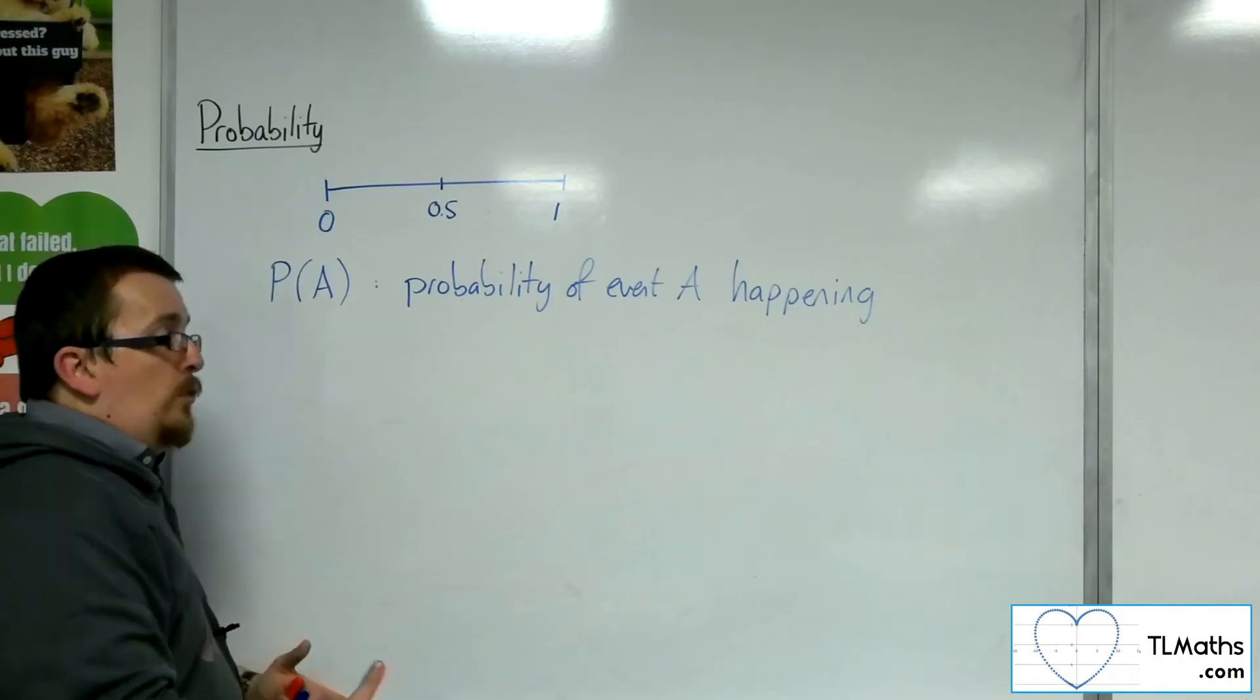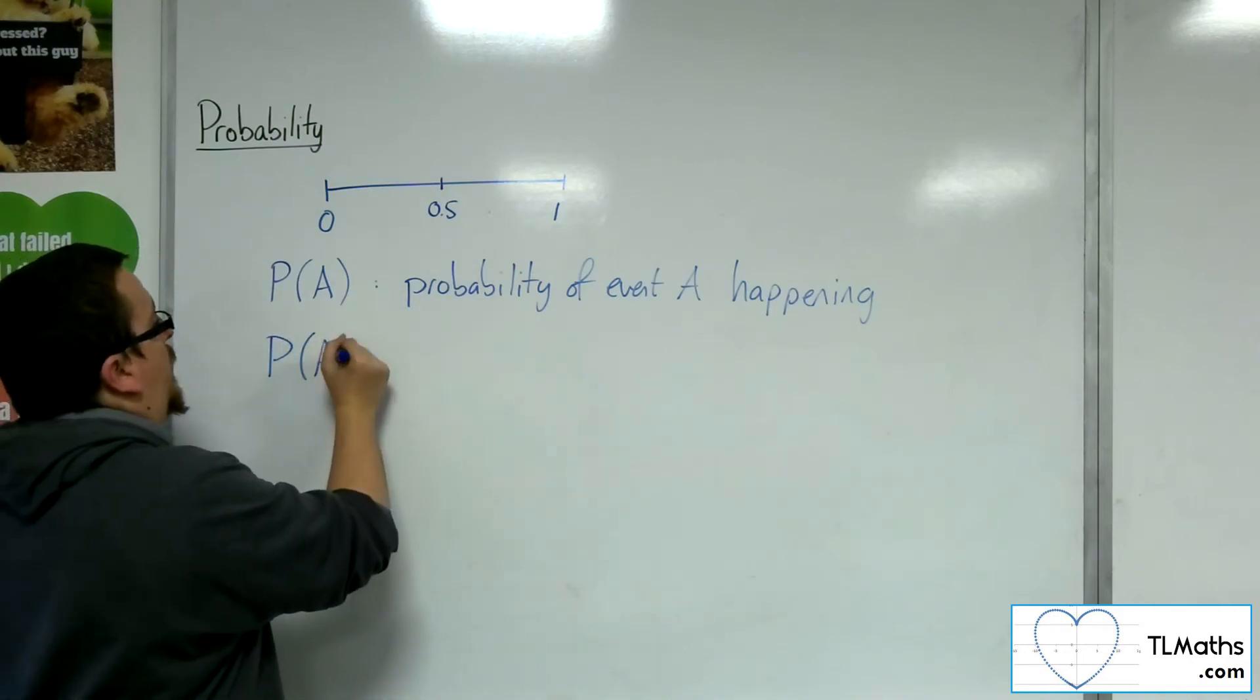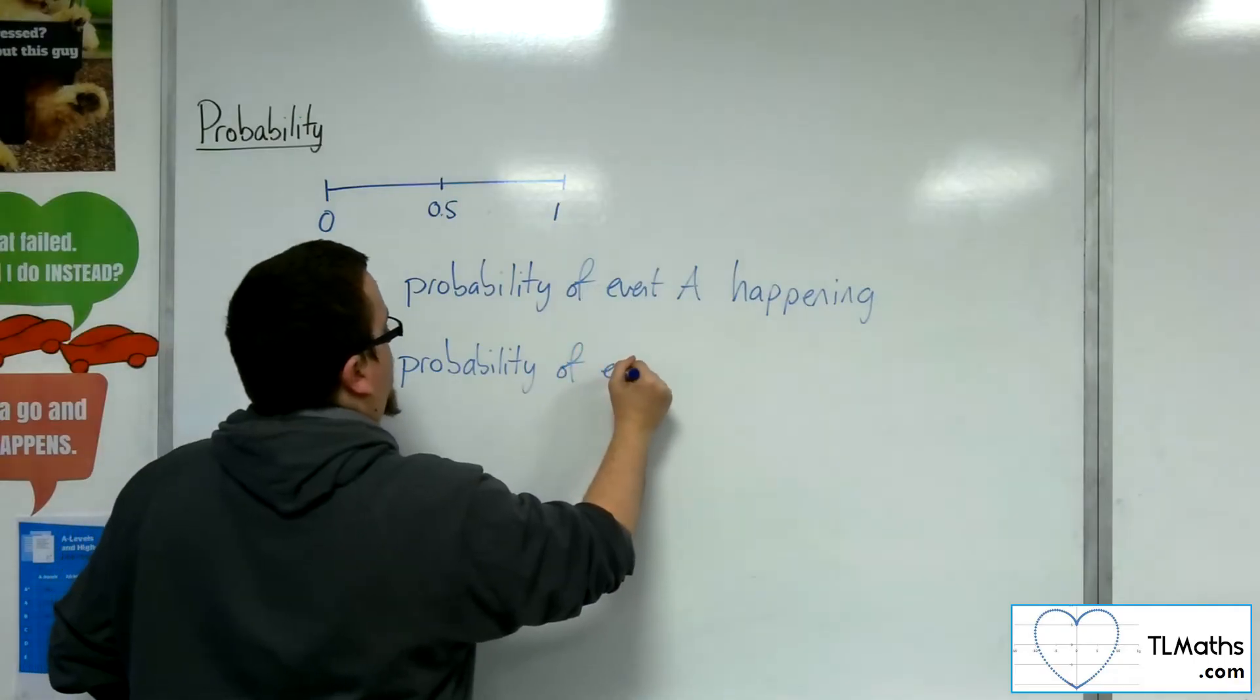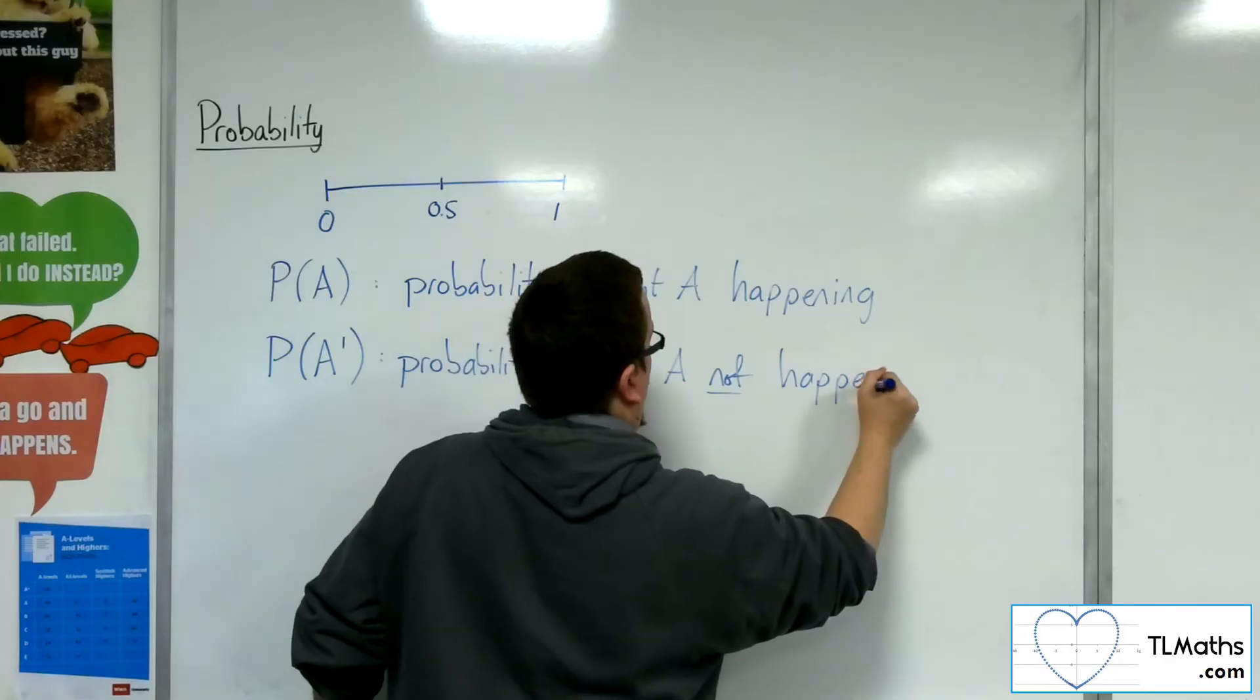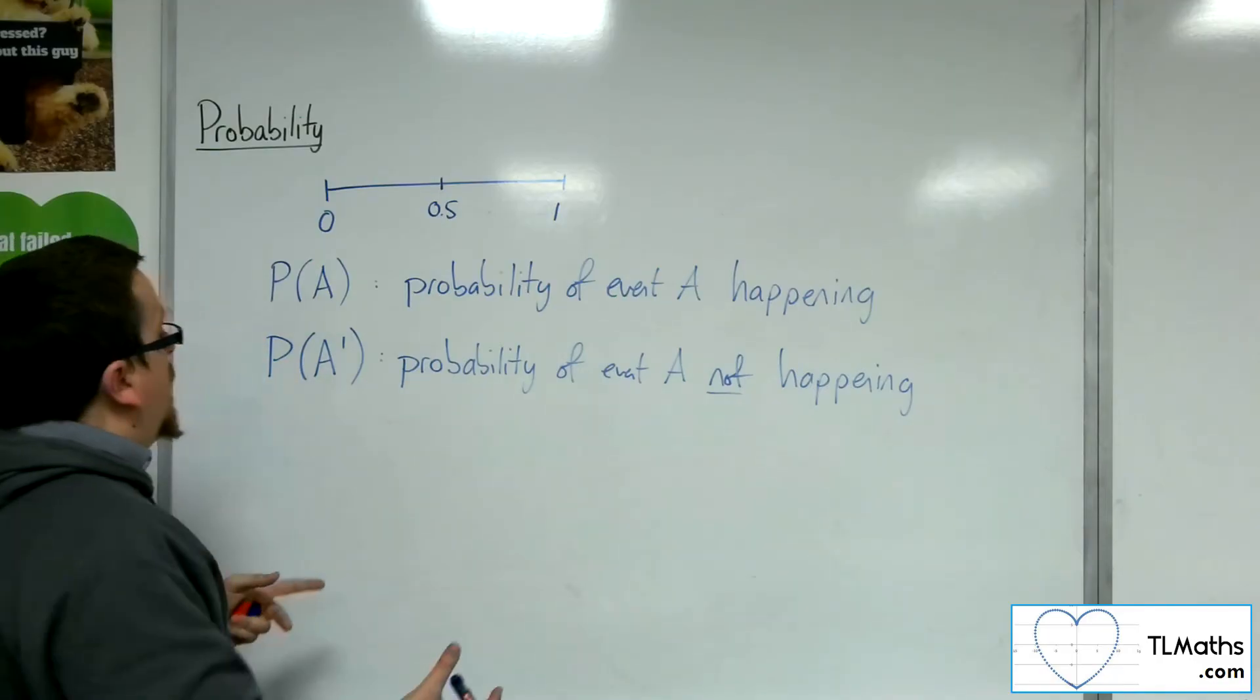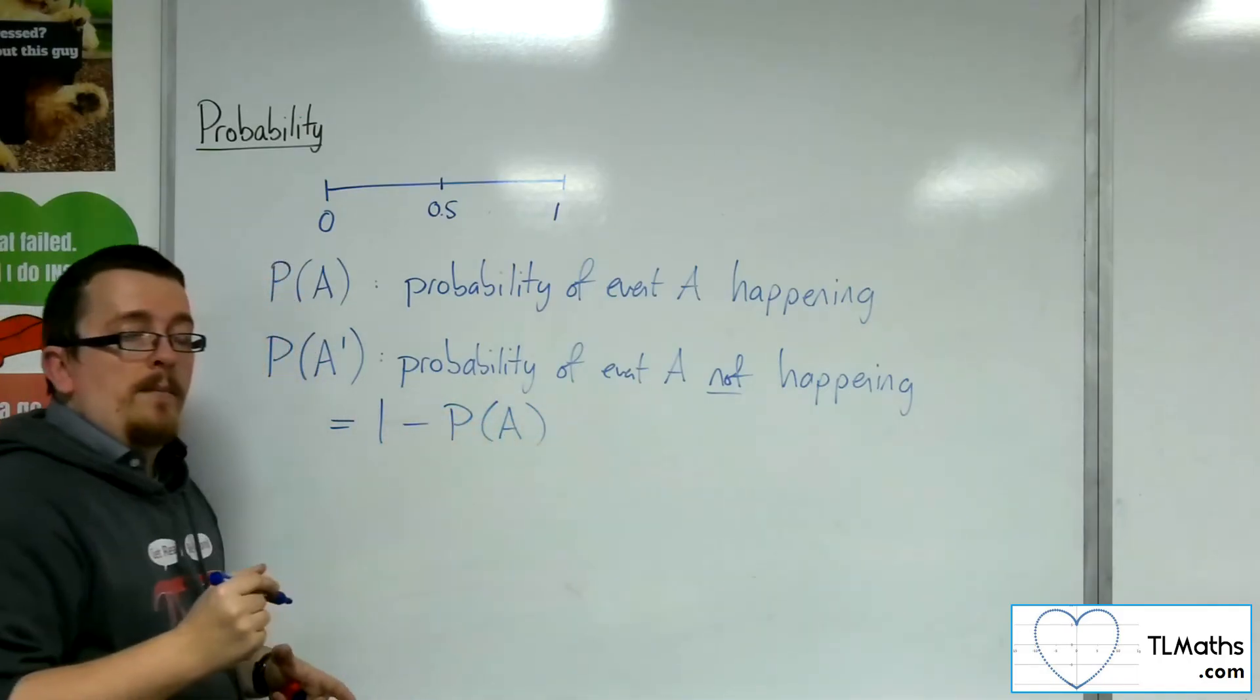And then we can also introduce the probability of A not happening, and the way that we write that down is using A prime. So this would be the probability of event A not happening. And if event P(A) has a probability between 0 and 1, then the probability of A not happening is equal to 1 take away the probability of A happening.